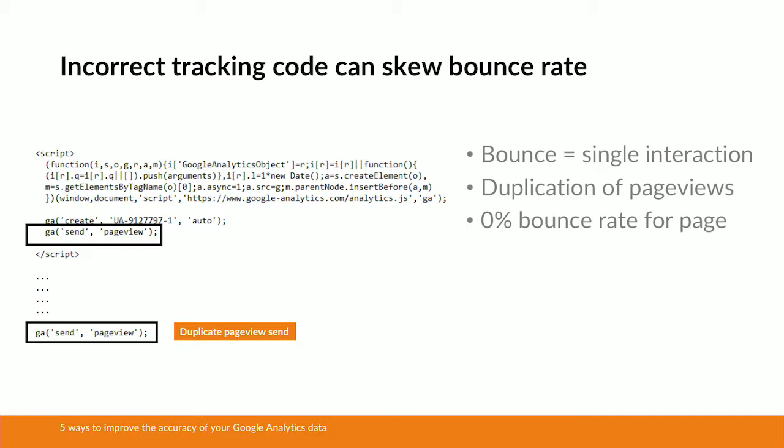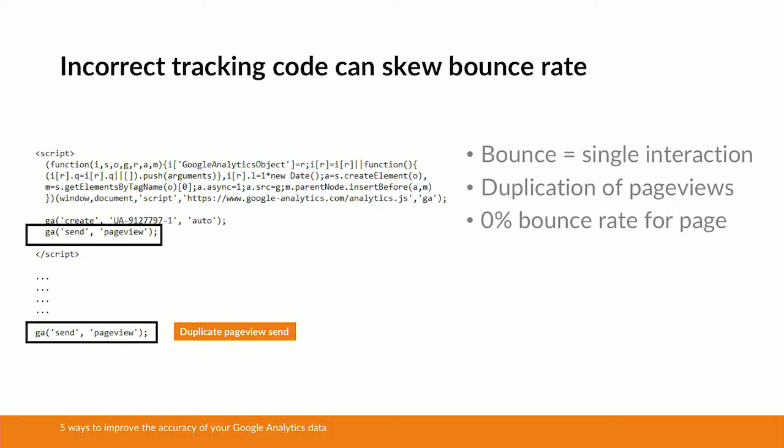A bounce is defined as a session with a single interaction. So if somebody lands on this particular page, Google Analytics is going to see two interactions because it's going to see two separate page views. Therefore, since that additional line of code was added, this page is going to have a 0% bounce rate, which isn't right — it's artificially skewed just because of that one piece of extra code on the page.